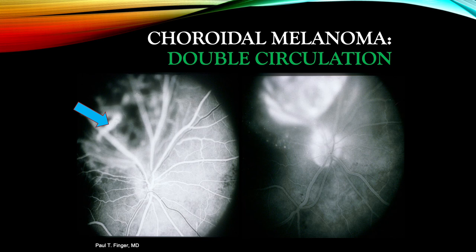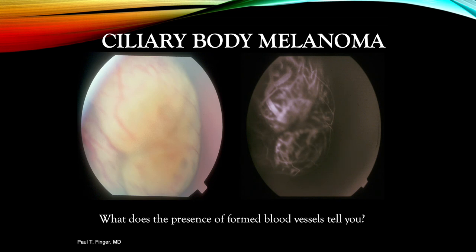Also note that the serous exudative retinal detachment is mildly hyperfluorescent. Here, on the left, we see a color photograph of an anterior uveal melanoma. Its relatively amelanotic surface reveals multiple formed intrinsic tumor blood vessels. Fluorescein angiography reveals even more formed tumor blood vessels. The presence of large formed blood vessels suggests that, unlike other choroidal tumors, this melanoma grew over a significant period of time, which has yet to be investigated.